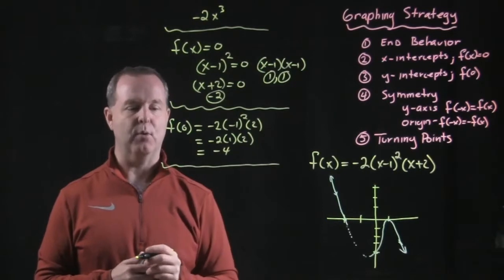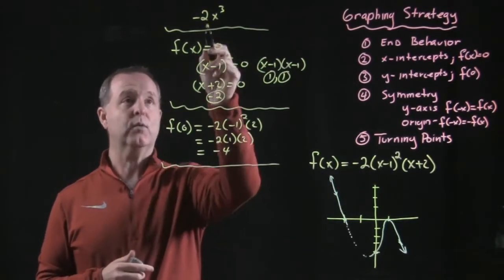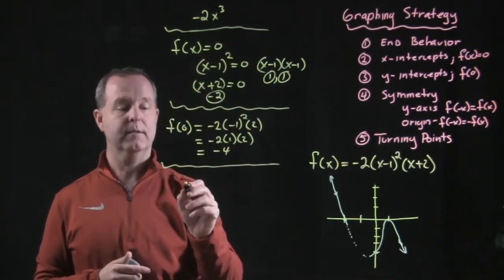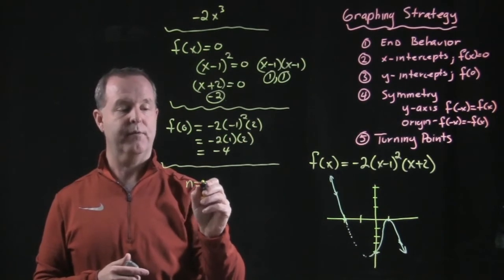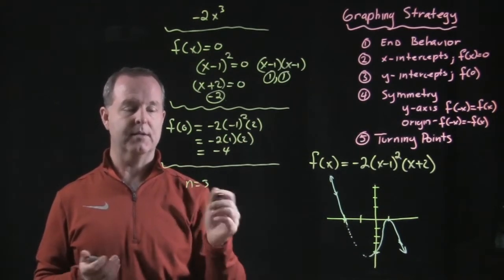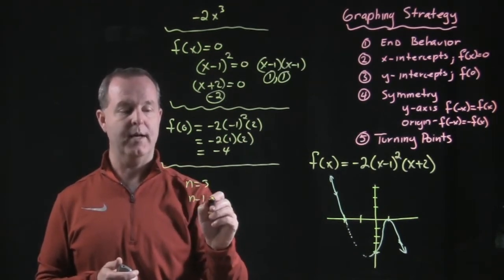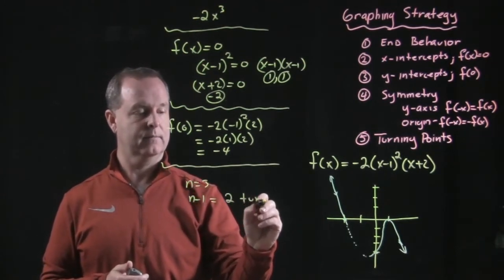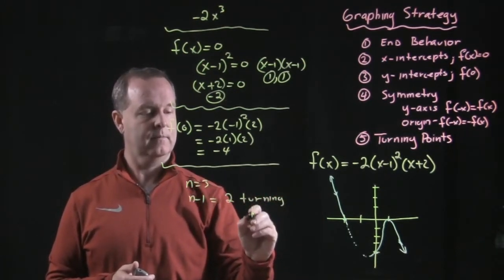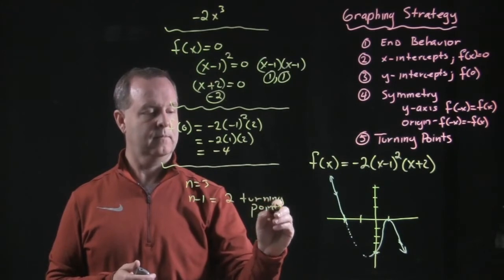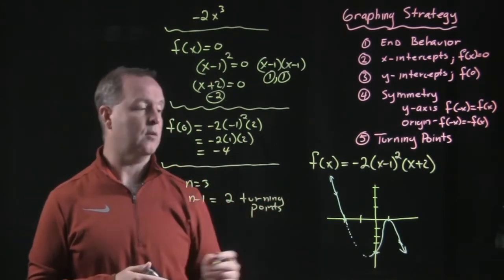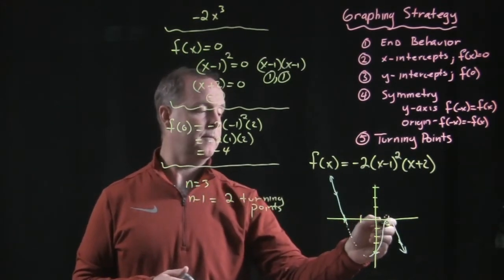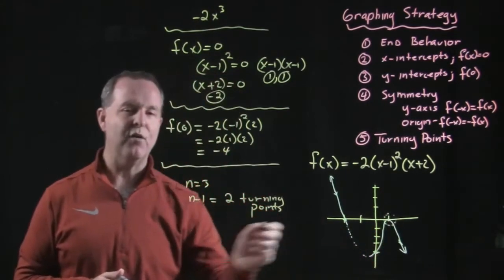And then lastly, turning points. My highest degree that we found out earlier is x cubed. So n would equal 3. My number of turning points would be n minus 1. So I have two turning points. And I can see that reflected in the graph. There's one right here. And I have another one.